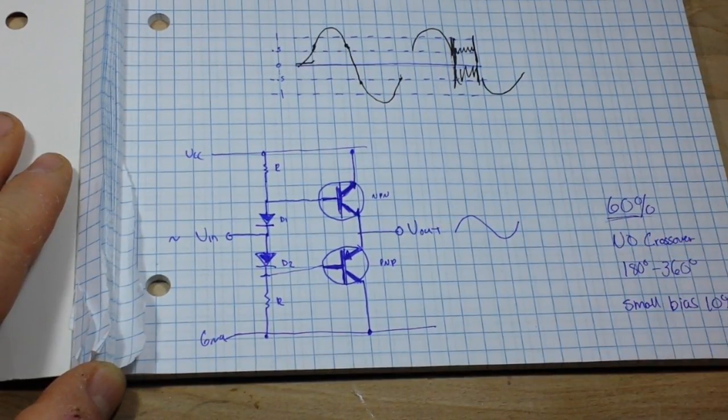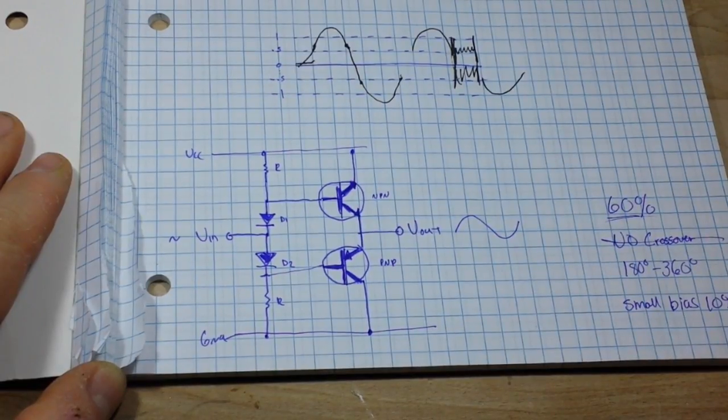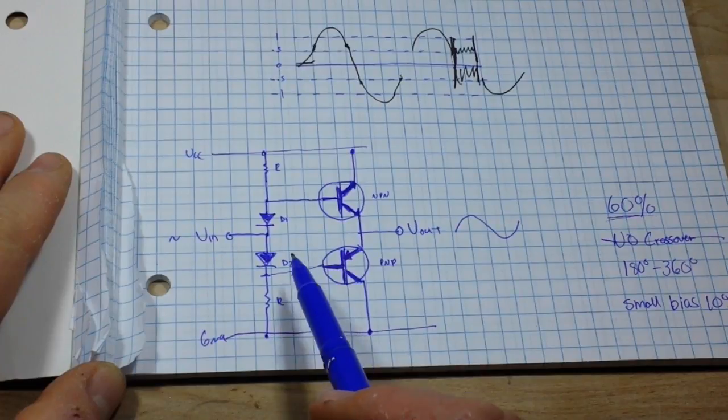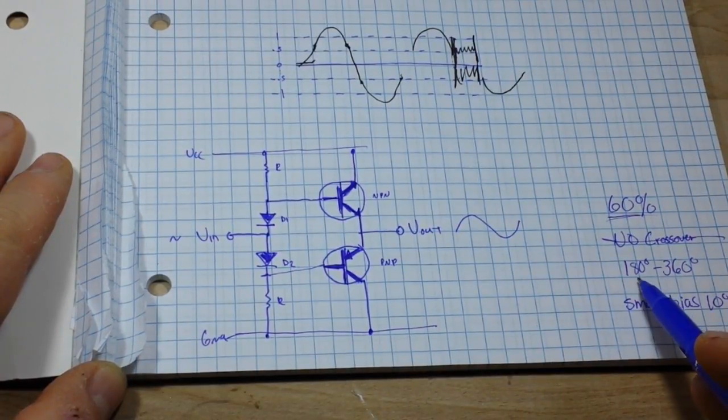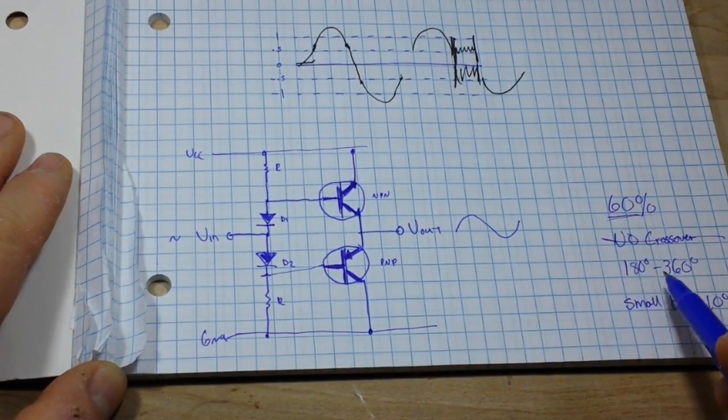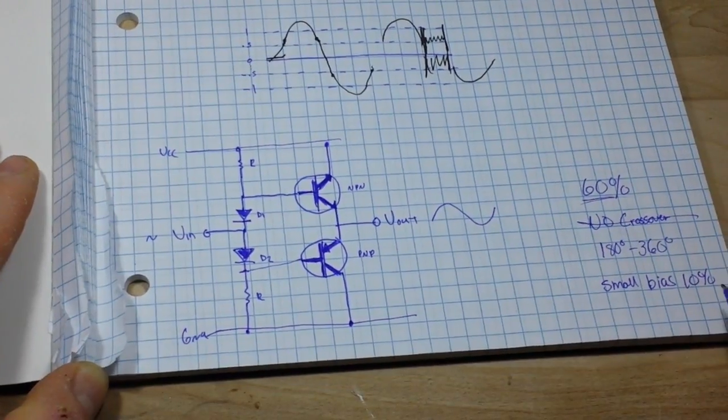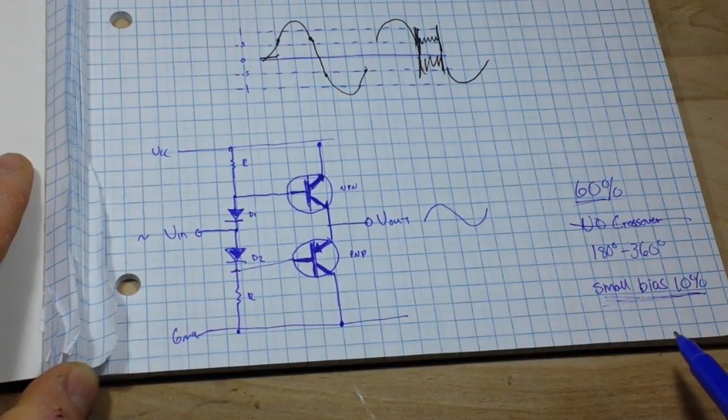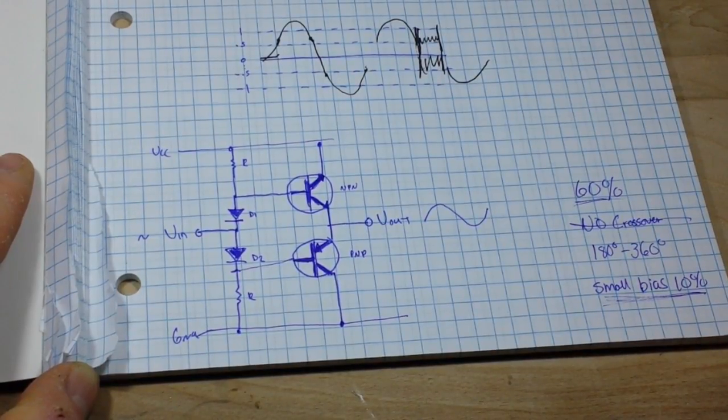What this does is gives us an efficiency of at least 60%, eliminates the crossover distortion, and depending on where we bias the bases of the transistors, it's going to conduct between 180 and 360 degrees of the waveform. Our bias voltage is going to be small, no more than 10% of the quiescent current.